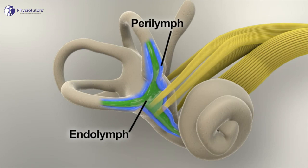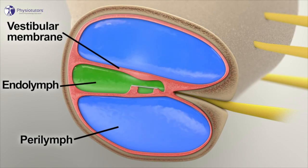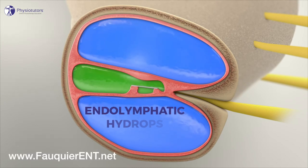The traditional explanation is that an increase in endolymphatic fluid causes distension of the membranous tissues that separates the endolymph from the other inner ear fluid, the perilymph. This phenomenon is called endolymphatic hydrops.